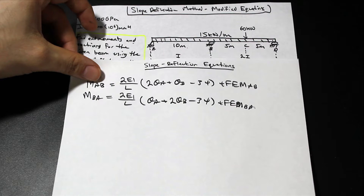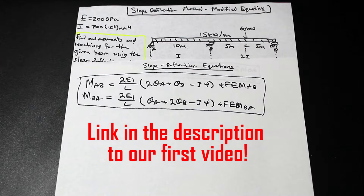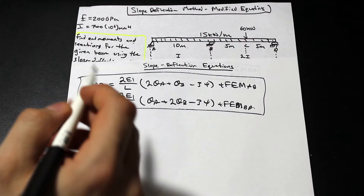I've written down the equations from the other video. If you haven't done that video yet and don't know where these equations came from, we explained it in the previous video. These are the regular slope deflection equations that can be applied to any section with any two supports. But when we have a hinged end, during an exam situation we're going to want to use the modified slope deflection method.